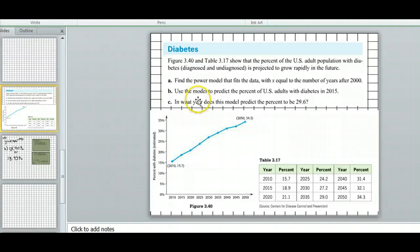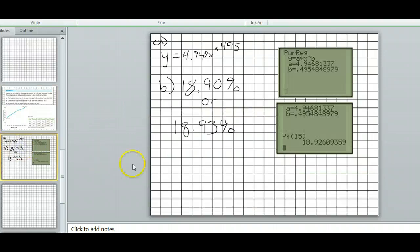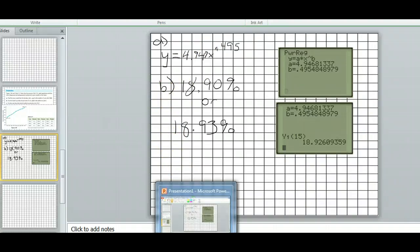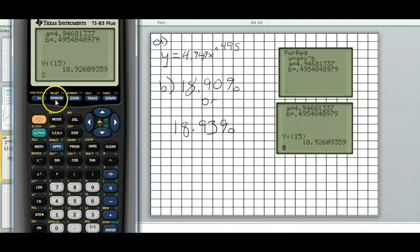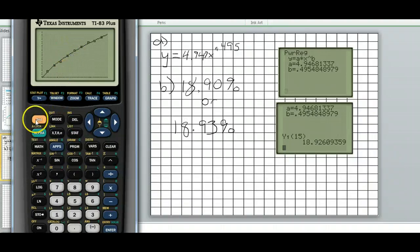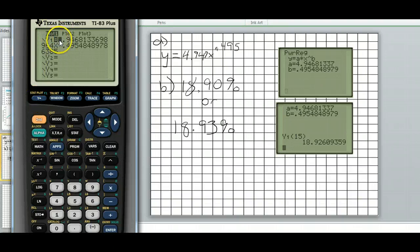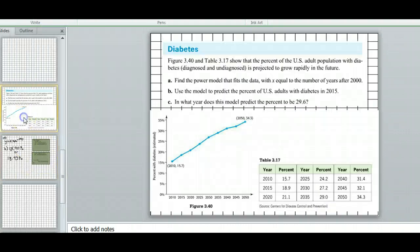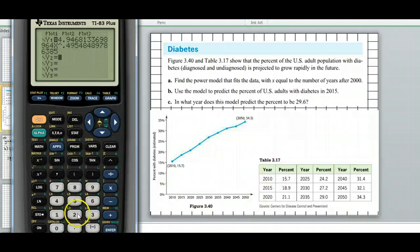And then the third part says, in what year does the model predict the percent to be 29.6? So when does this thing get to 29.6? There's a couple ways we can do it. I'll show you both ways. But I would be expecting you to use your calculator here. So we've got this in there. I'm going to turn the plot off. If you go to y equals, see it's got the plot on and it's got your graph of your model on. We only need the model. So I'm going to go up here and turn the plot off by highlighting it, hitting enter. And now only the graph is on. And then I'm going to go down to y2 just like we did last time. And I'm going to tell it 29.6 for y2.